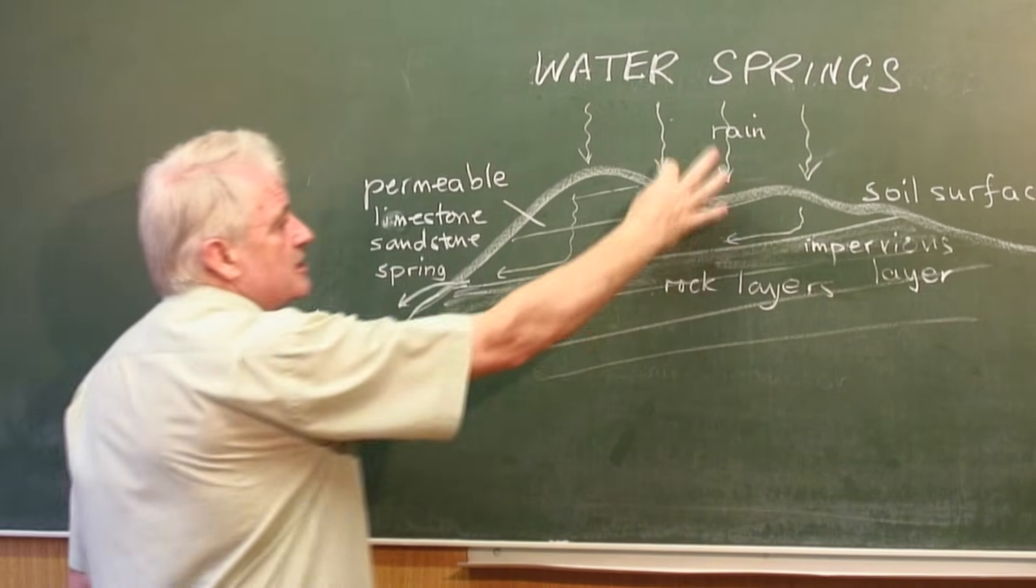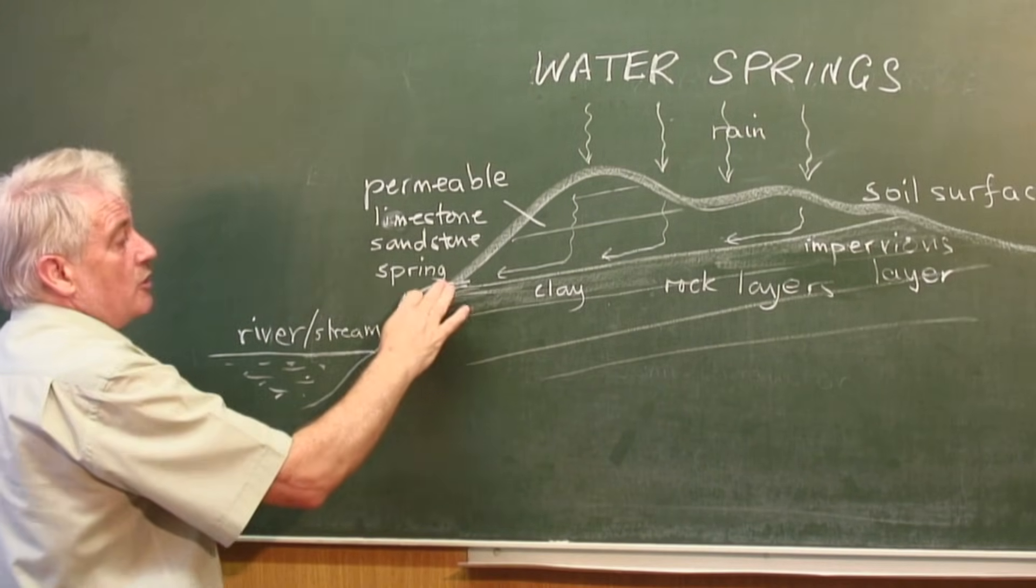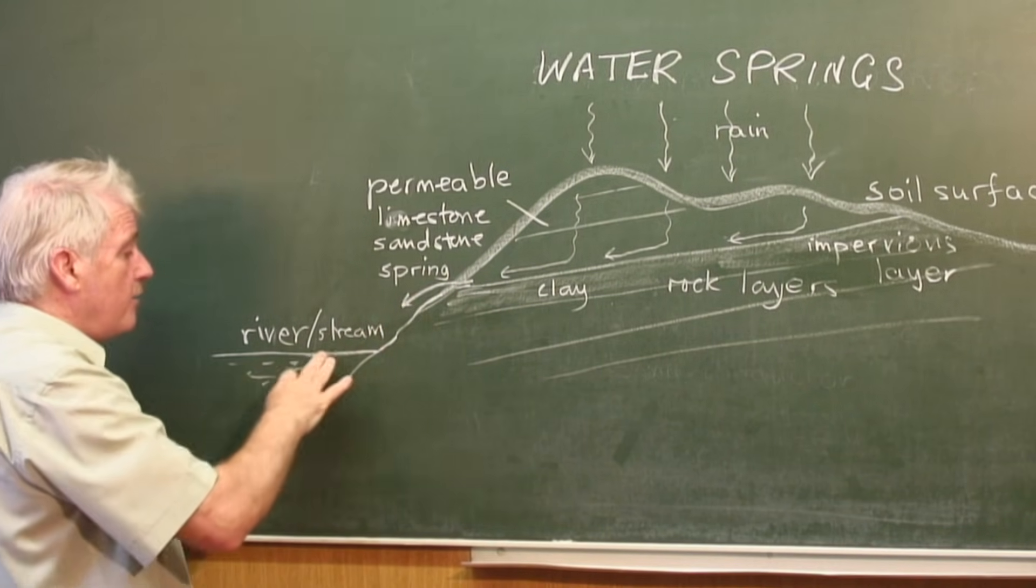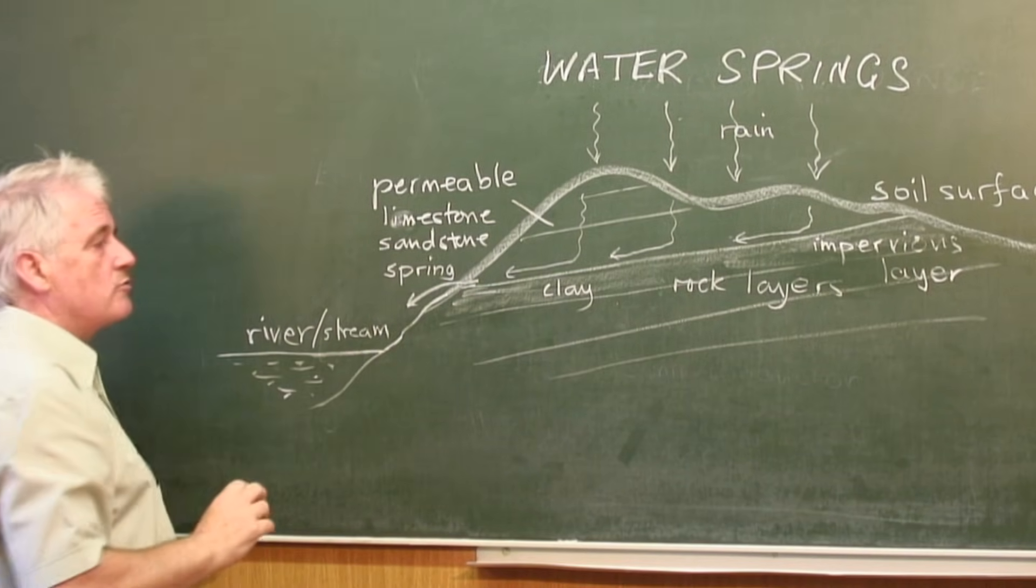That is, the water that is collected over this large area comes out through usually a line of small springs, and then flows down and into a stream. It produces a stream that flows into a river.